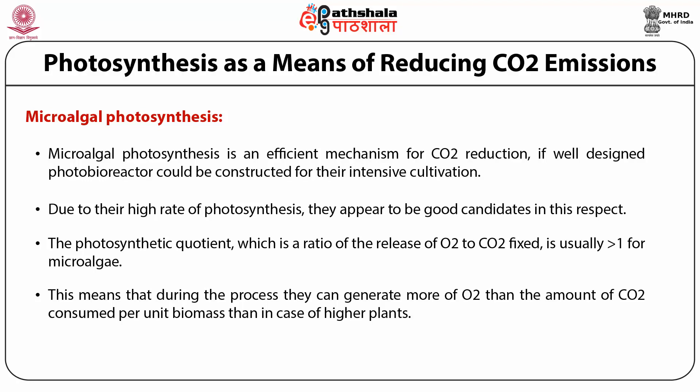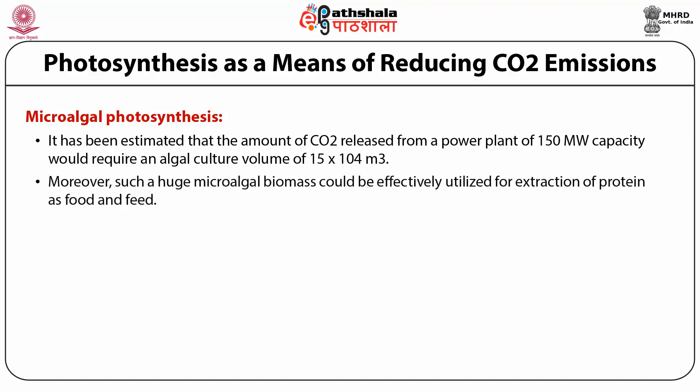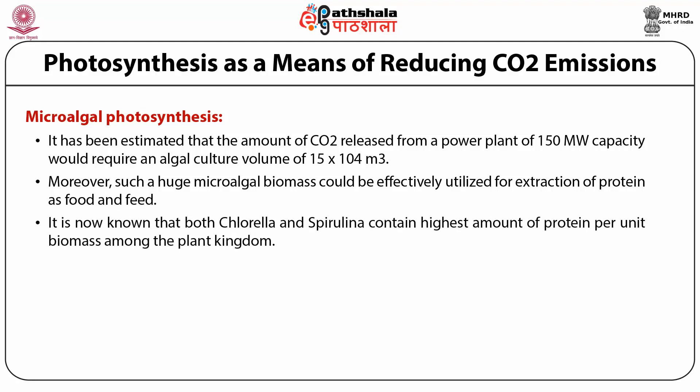Photobioreactors would be useful where cultivation can be made in cultures with artificial light and fiber optic light radiators. Several such reactor designs have been proposed and large-scale continuous cultivations have been done with Chlorella, Pyranoidosa, and Spirulina maxima. It has been estimated that the carbon dioxide released from a 150-megawatt power plant would require an algal culture volume of 15×10⁴ cubic meters. Such a huge microalgal biomass could also be effectively utilized for extraction of protein as food and feed, since both Chlorella and Spirulina contain the highest amount of protein per unit biomass among the plant kingdom.